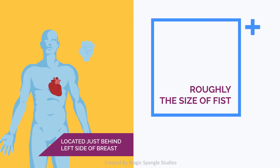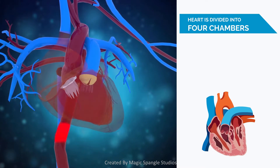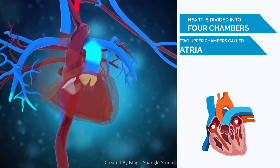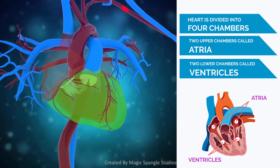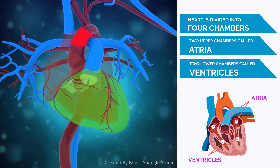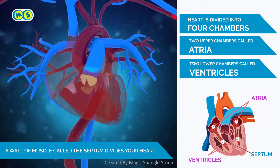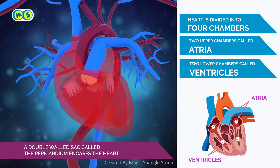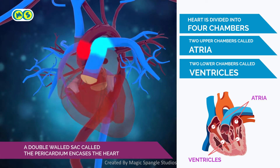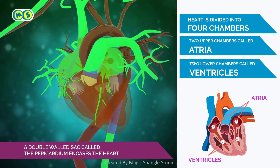The human heart is roughly the size of a large fist and is located just behind and slightly left of your breastbone. Your heart is divided into four chambers: two upper chambers called the atria and two lower chambers called the ventricles. A wall of muscle called the septum divides your heart.